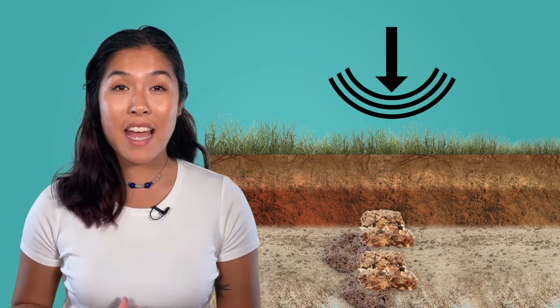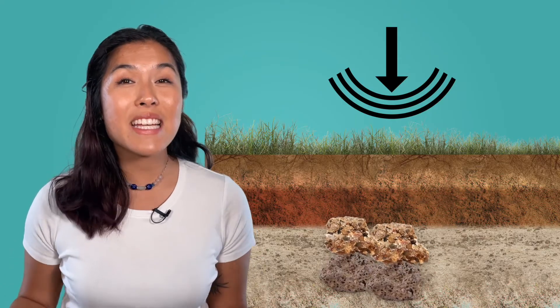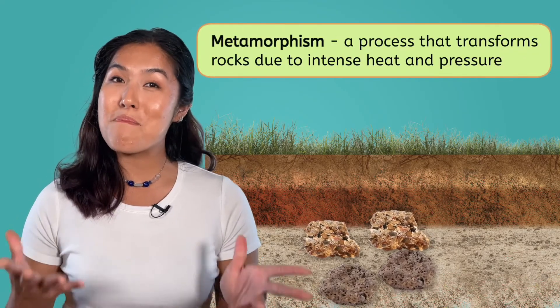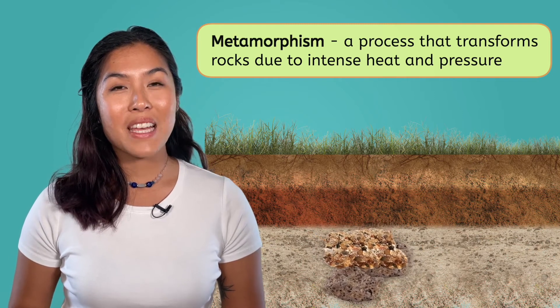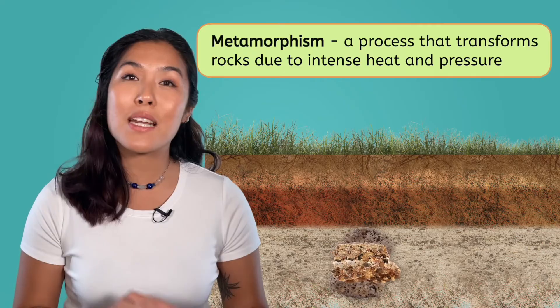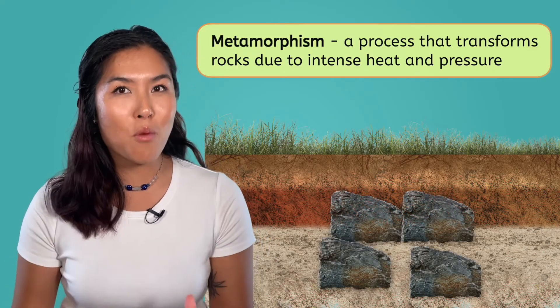Processes like cementation, compaction, weathering, and erosion cause the rocks that make up Earth's surface to constantly shift. Over time, these rocks can end up buried in the middle of mountains or even miles underground. This puts them under huge amounts of heat and pressure, and eventually all the heat and pressure starts to change these rocks through a process called metamorphism. This heat and pressure causes igneous and sedimentary rocks to transform into metamorphic rocks.